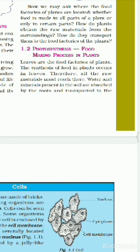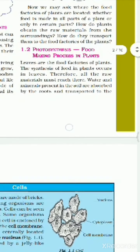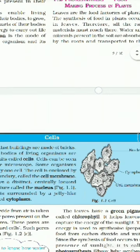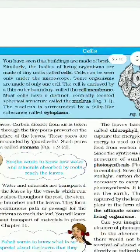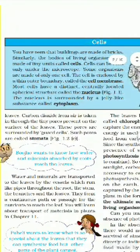Therefore all the raw materials must reach the leaves. All raw materials — water and minerals — are absorbed by the roots and transported to the leaves.